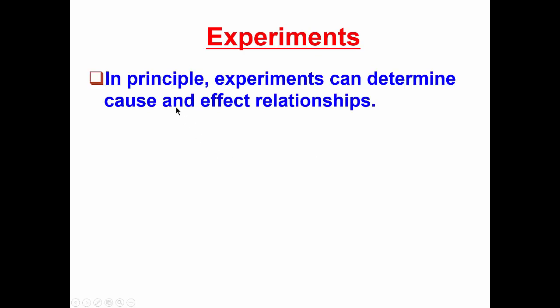Experiments play a very important role in modern psychology because, in principle, experiments can determine cause-and-effect relationships. This contrasts with an earlier video where we noted that observational methods cannot determine cause-and-effect relationships.